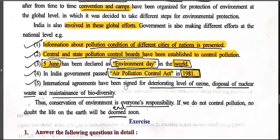International agreements have been signed for the deteriorating level of ozone — as ozone depletes, ultraviolet rays reach the earth which are harmful for humans and all living organisms, so the ozone level must not be allowed to deteriorate. Disposal of nuclear waste such as uranium and thorium — which are used in electricity production — must be properly managed, as the uranium rods emit radiation harmful to humans if left in the open. Maintenance of biodiversity must be ensured for both plant species and animal species. Thus, conservation of the environment is everyone's responsibility.